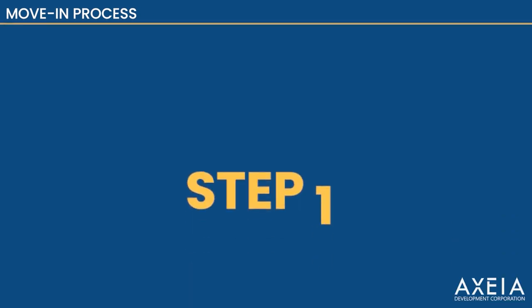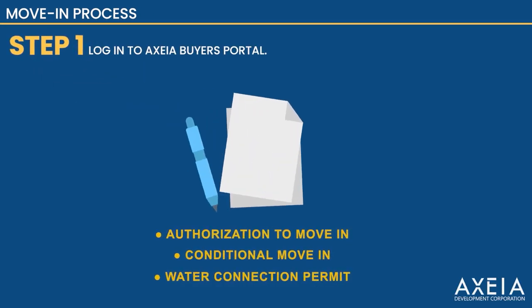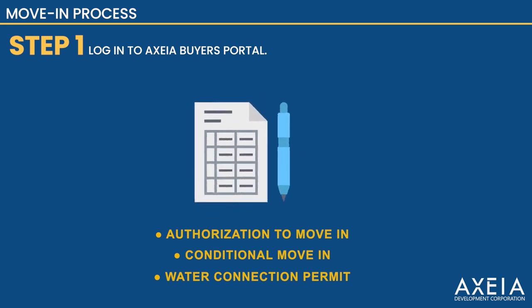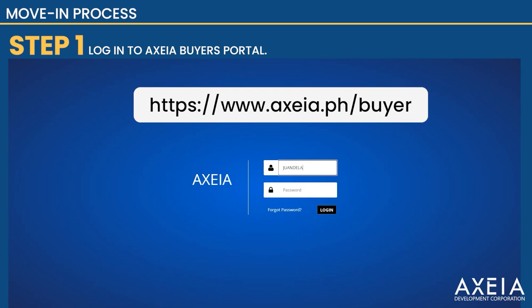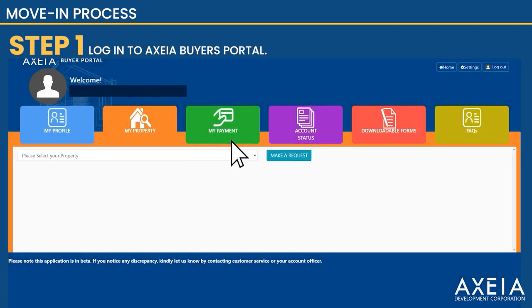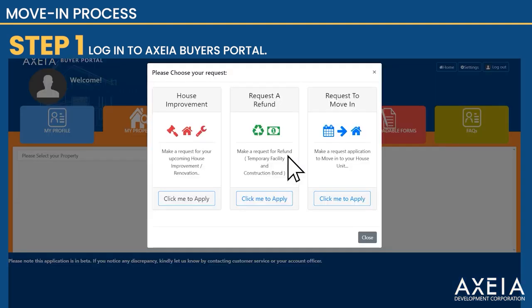Move-in Process Step 1. To process authorization to move-in or conditional move-in paper and water connection permit, you need to access the AXEA Buyer's Portal. Log in to this link. Go to My Property and click the Make a Request button. A pop-up window will appear. Go to Request to Move-in and click on the Click Me to Apply button.